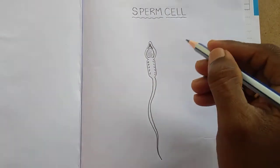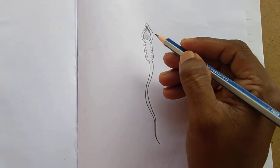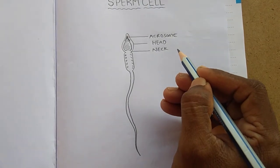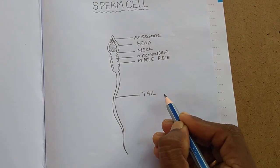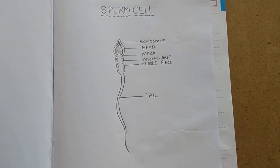This is the nucleus. Now the diagram is completed, we have to do the labeling. Yes, with this the labeling is completed and diagram also completed. Thank you for watching.